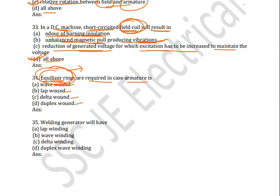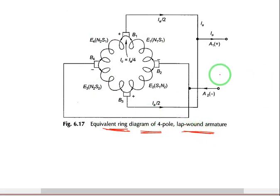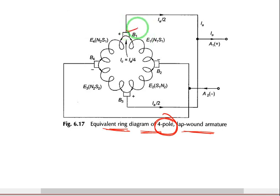For sparkless commutation we use the equalizer ring in lap-wound generators. Here is how it appears — the equalizer ring diagram for a lap-wound armature. It is a four-pole generator, so you can see four paths and four brushes here.